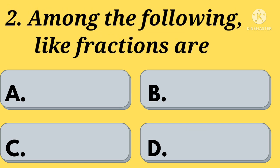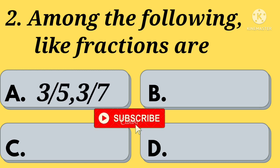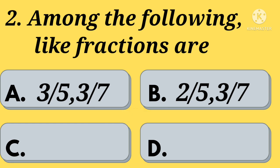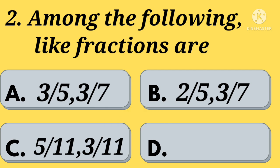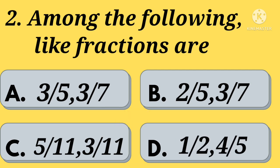Among the following, like fractions are — Option A: 3 by 5, 3 by 7. Option B: 2 by 5, 3 by 7. Option C: 5 by 11, 3 by 11. Option D: 1 by 2, 4 by 5. Your time starts now.